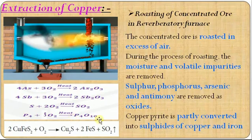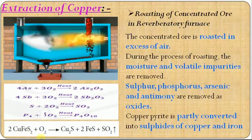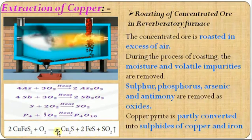The remaining part is copper pyrite. Because of oxygen, the sulfur combines to form sulfur dioxide. Then the copper pyrite is partially converted into copper(I) sulfide and iron(II) sulfide. So the copper pyrite is partially converted into sulfides of copper and iron. This process is called roasting.